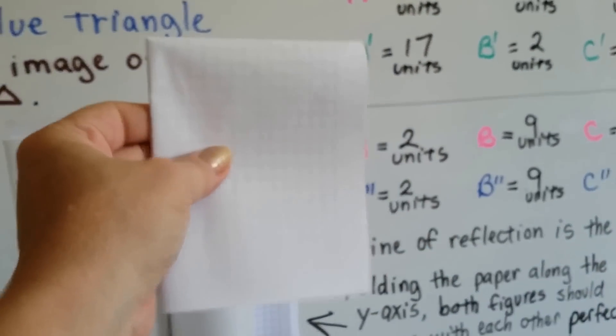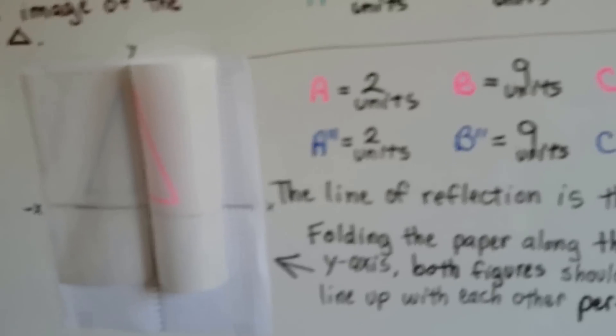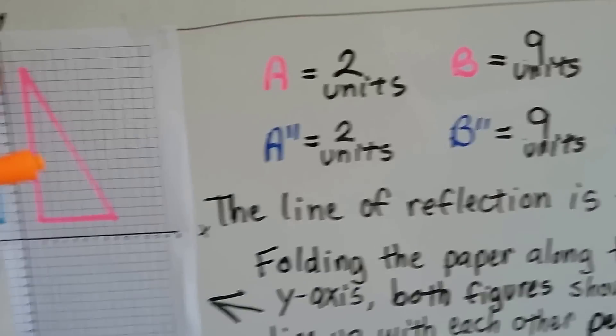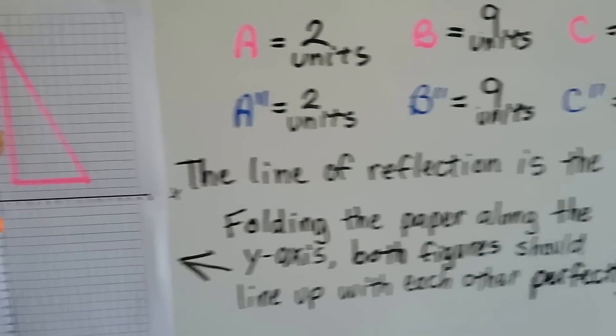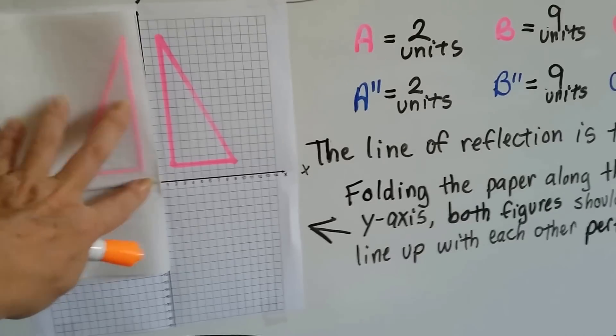If you've got some paper, you can try doing that. Those are reflections, that means you did it correctly. For this one, the line of reflection is the y-axis, it's right here. And folding the paper along the y-axis, both figures should line up perfectly with each other.